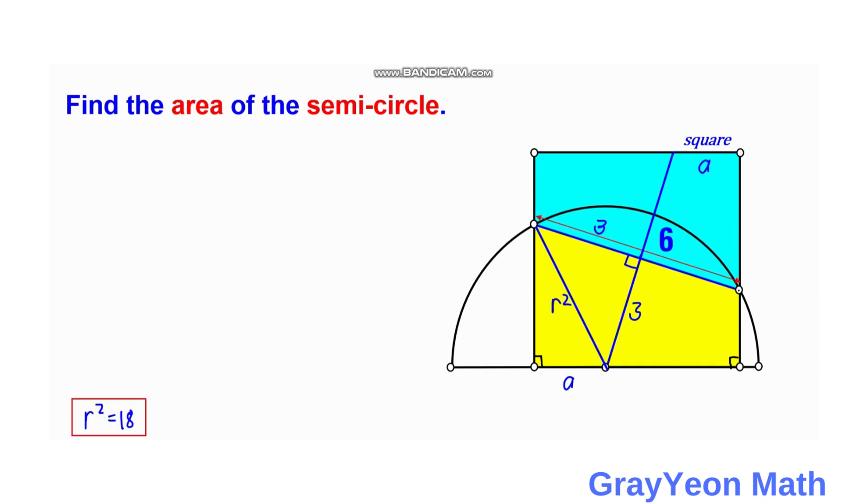So now that we have the value of R square, it is now easy to find the area of this semicircle. So area is equal to pi over 2, since this is a semicircle, times R square. So area is equal to pi over 2 times R square is 18. So 18 over 2 is 9, so area is equal to 9 pi.